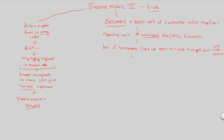Within a sarcomere, there are more components to highlight. We know it contains actin and myosin, but let's look at how they're arranged. In a sarcomere, you'll have two important components: Z-lines, sometimes referred to as Z-discs, and an M-line. This is all within one sarcomere — one unit of contraction.